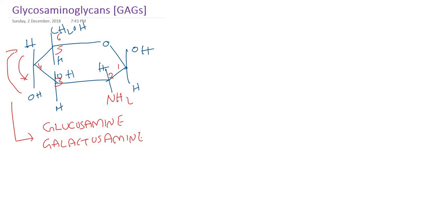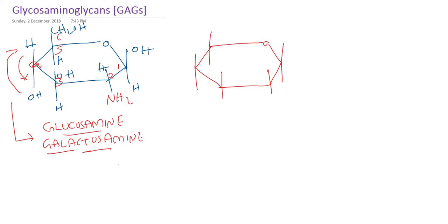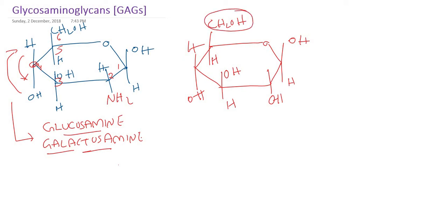The majority of mucopolysaccharides or glycosaminoglycans contain either glucose or galactose and their derivatives. Another component will be uronic acid. Uronic acid means the sixth carbon atom's CH₂OH is replaced by an acid group, COOH — or at physiological pH, COO⁻. Since it is derived from glucose, we call this glucuronic acid. If derived from galactose, it becomes galacturonic acid.